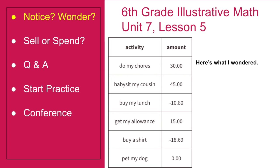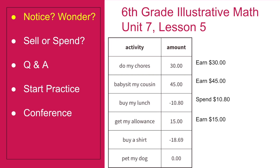Here's what I wondered. Doing my chores means that I earned $30. Babysitting my cousin means that I earned $45. Buying my lunch means that I spent $10.80. And I would continue until I was done with this slide.